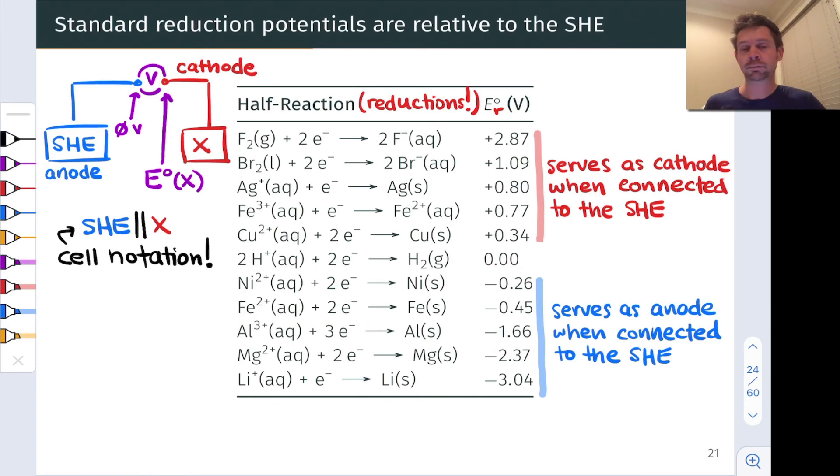Now something you may be thinking about here is what if I replace the SHE with some other half cell? Can I use these standard reduction potentials to calculate the cell potential for the resulting galvanic cell? And the answer is absolutely yes, you can. And that's the reason we essentially generate and measure these standard reduction potentials.